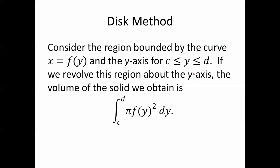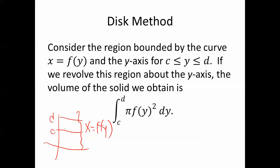That's great if we're revolving about the x-axis. Consider the region bounded by the curve x equals f of y and the y-axis for y between c and d. If we revolve this region about the y-axis, the volume of the solid we obtain is the integral from c to d of pi times f of y squared dy. It's really the same idea as before — just dealing with y's instead of x's, with x as a function of y instead of y as a function of x.